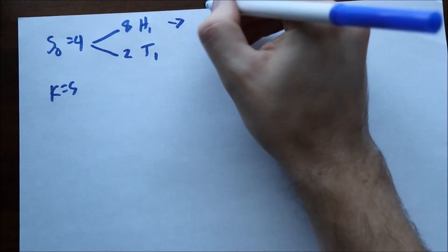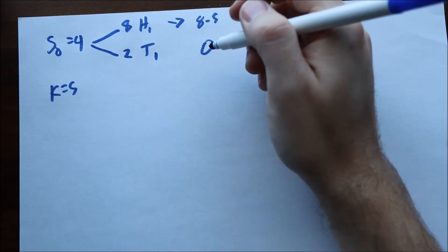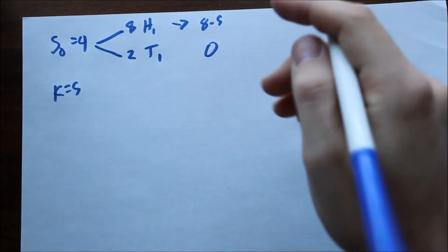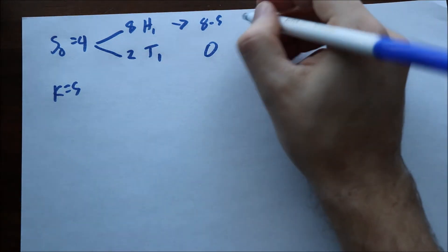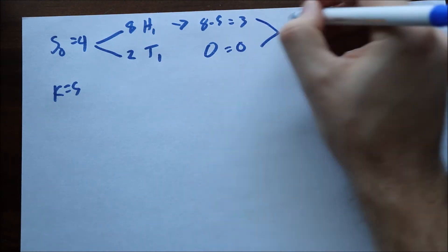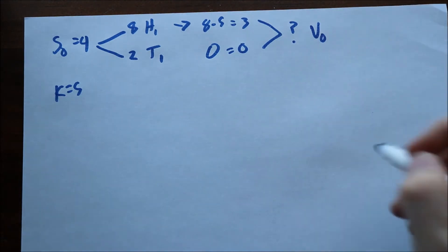So to get these, you end up with 8 minus 5. And at time T, we end up with 0 because the call will expire worthless. So it's always 0 for a call option. This is equal to 3. This is equal to 0. And we have to solve for the V of 0, which is the value of the option at time 0.